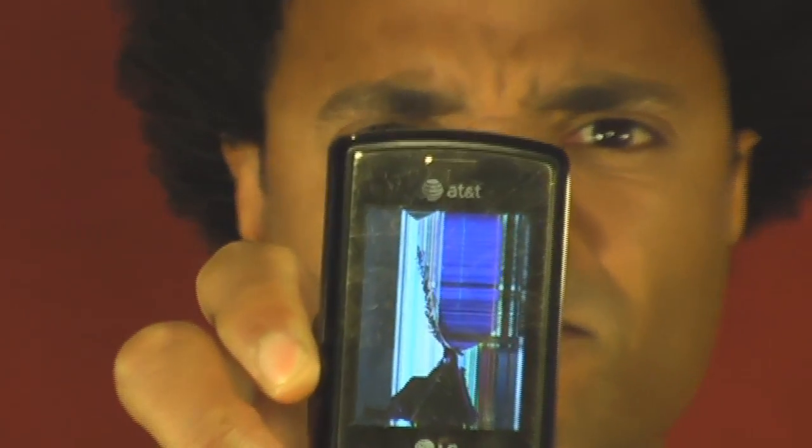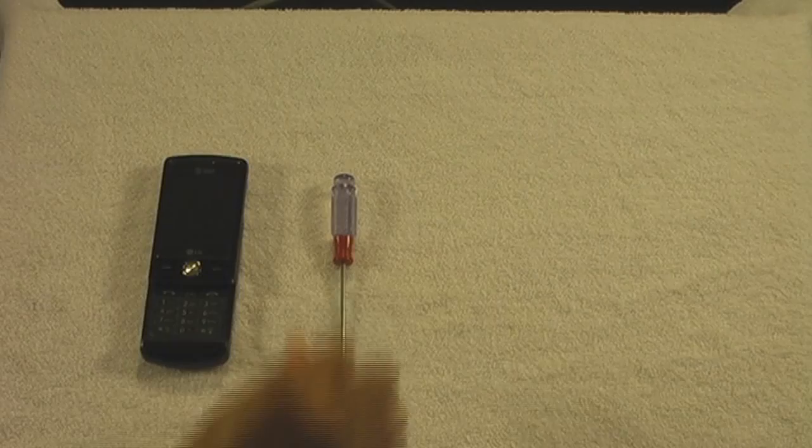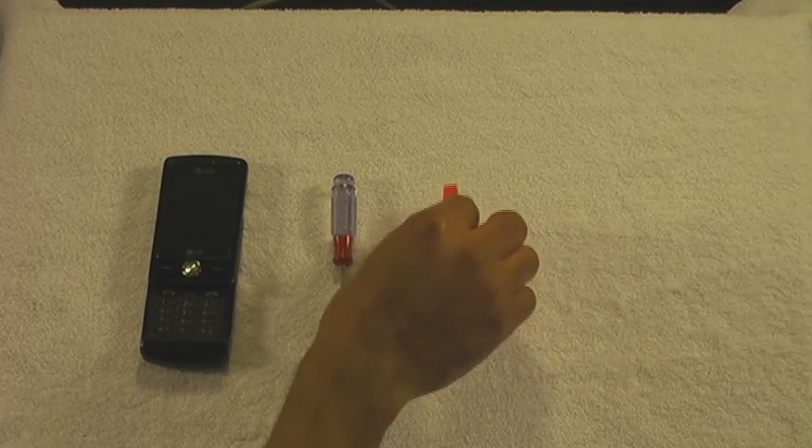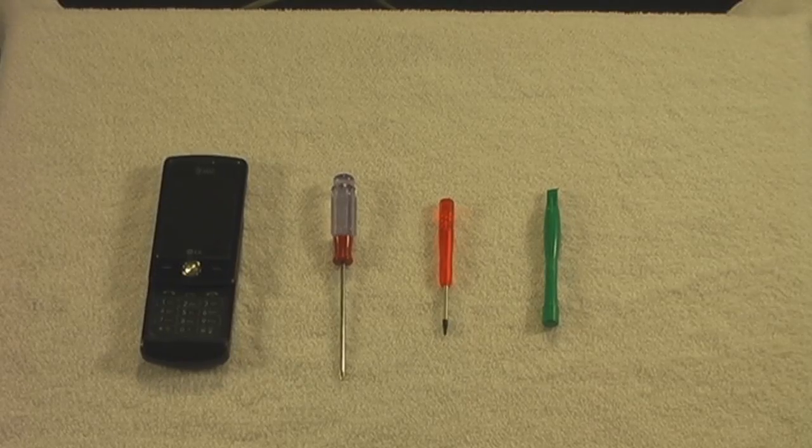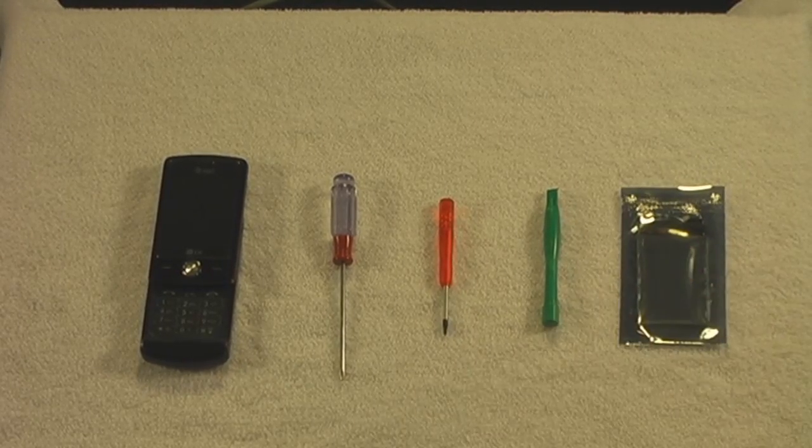So you've got a broken LCD screen on your cell phone. Yeah, I know the feeling. Here's what you need to fix it: a broken cell phone, a small Phillips screwdriver, and you may need a smaller Phillips screwdriver just in case. Then you need a plastic pry tool which usually comes with a new LCD screen.